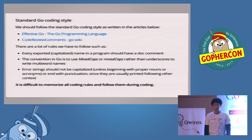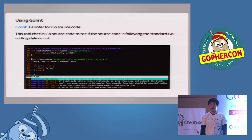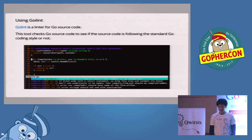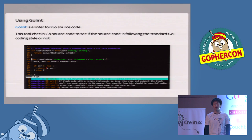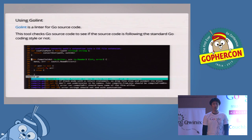GoImports is another good tool for formatting Go source code. It formats Go source code just as GoFmt does. In addition, it organizes import lines in groups with blank lines between them, like this example code.